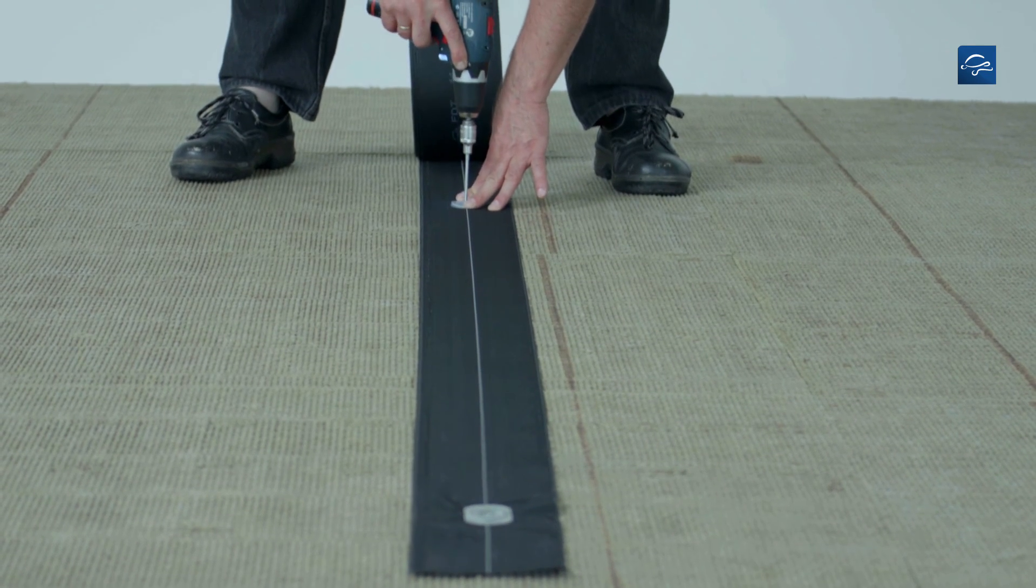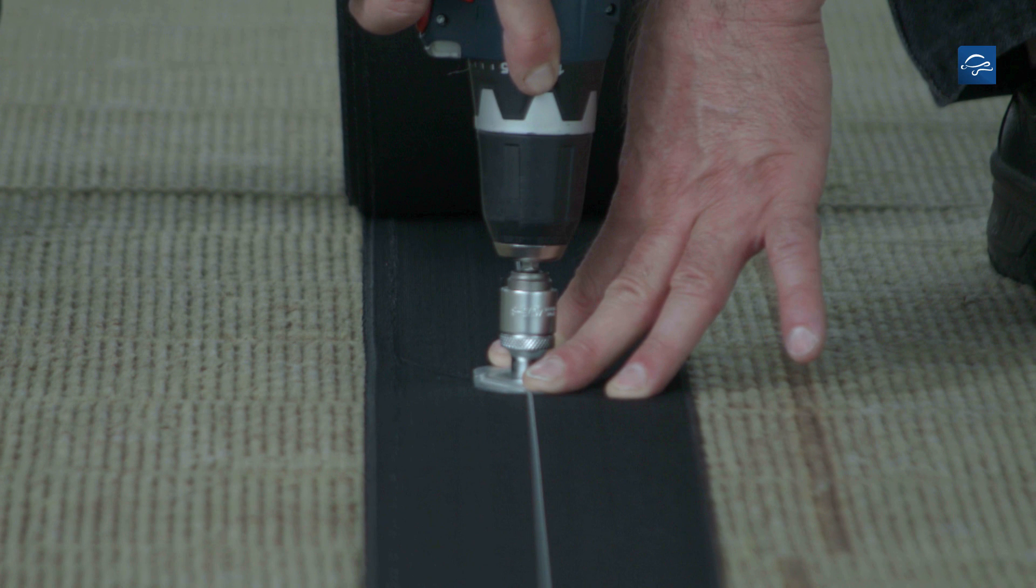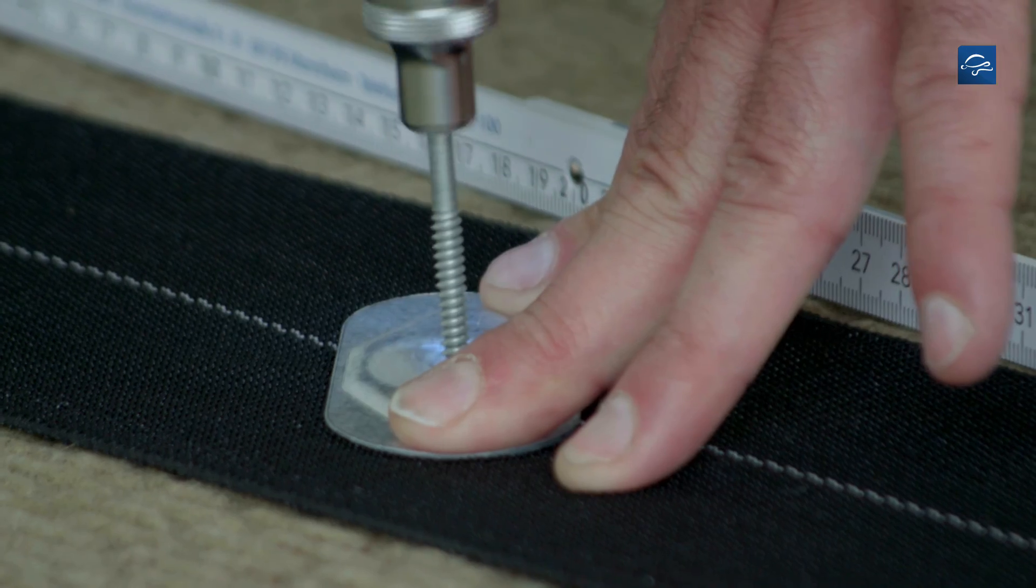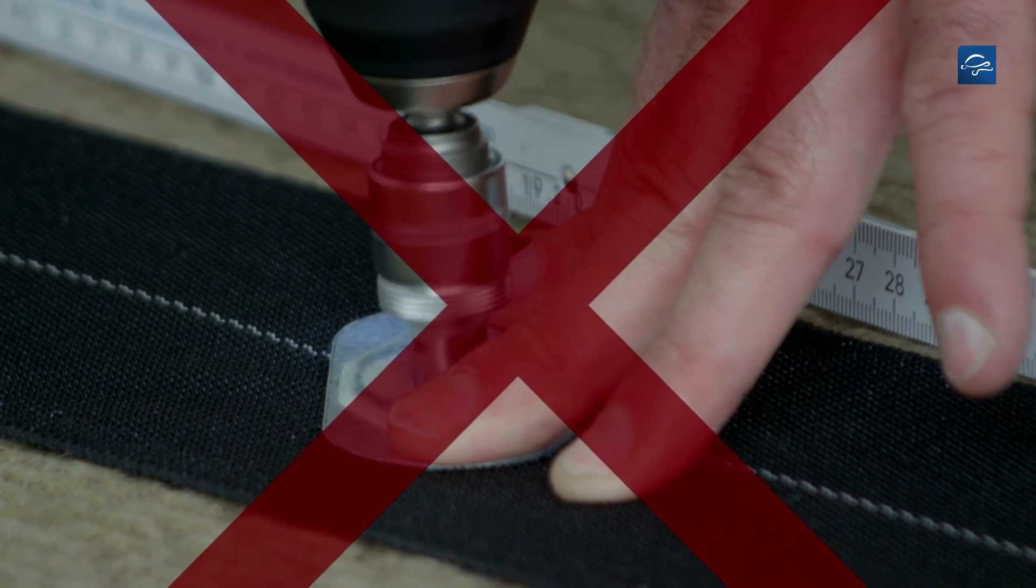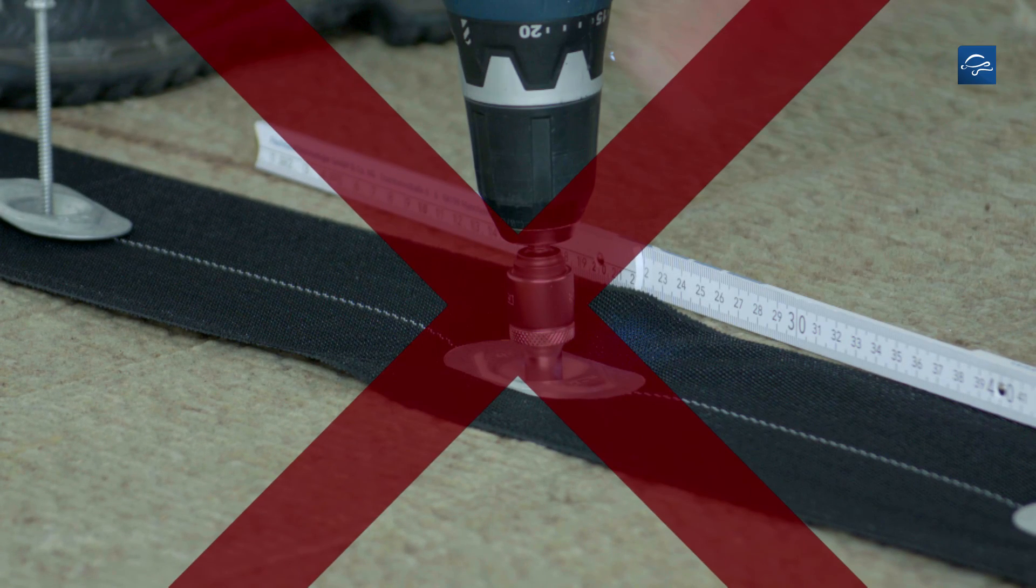Roll out and prefix the GripFix strips in the middle using corresponding maximum 5cm wide fasteners. Do not place any fasteners off the center line and do not twist the load distribution plates. Also, avoid causing depressions by screwing the screws in too deep.